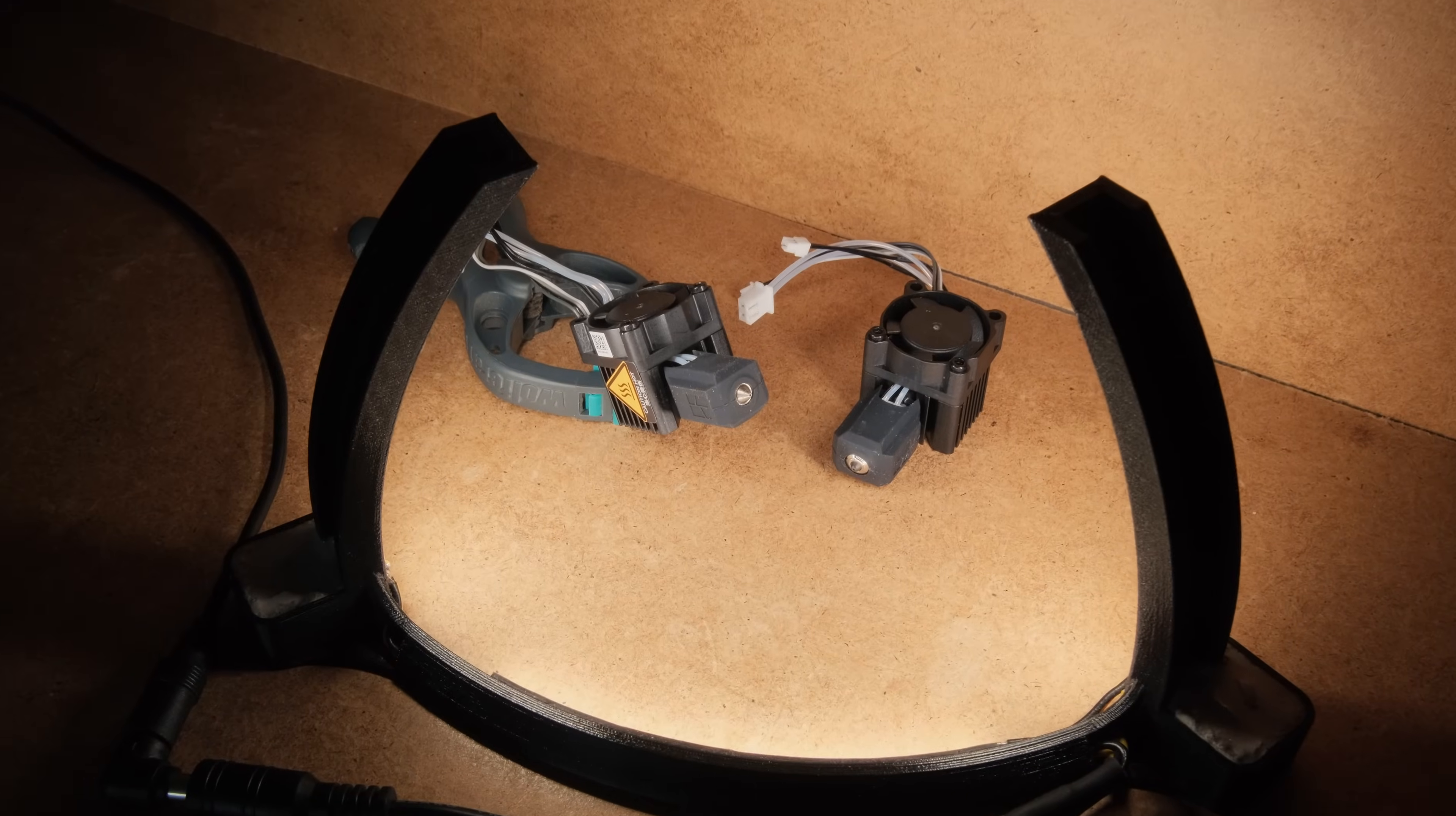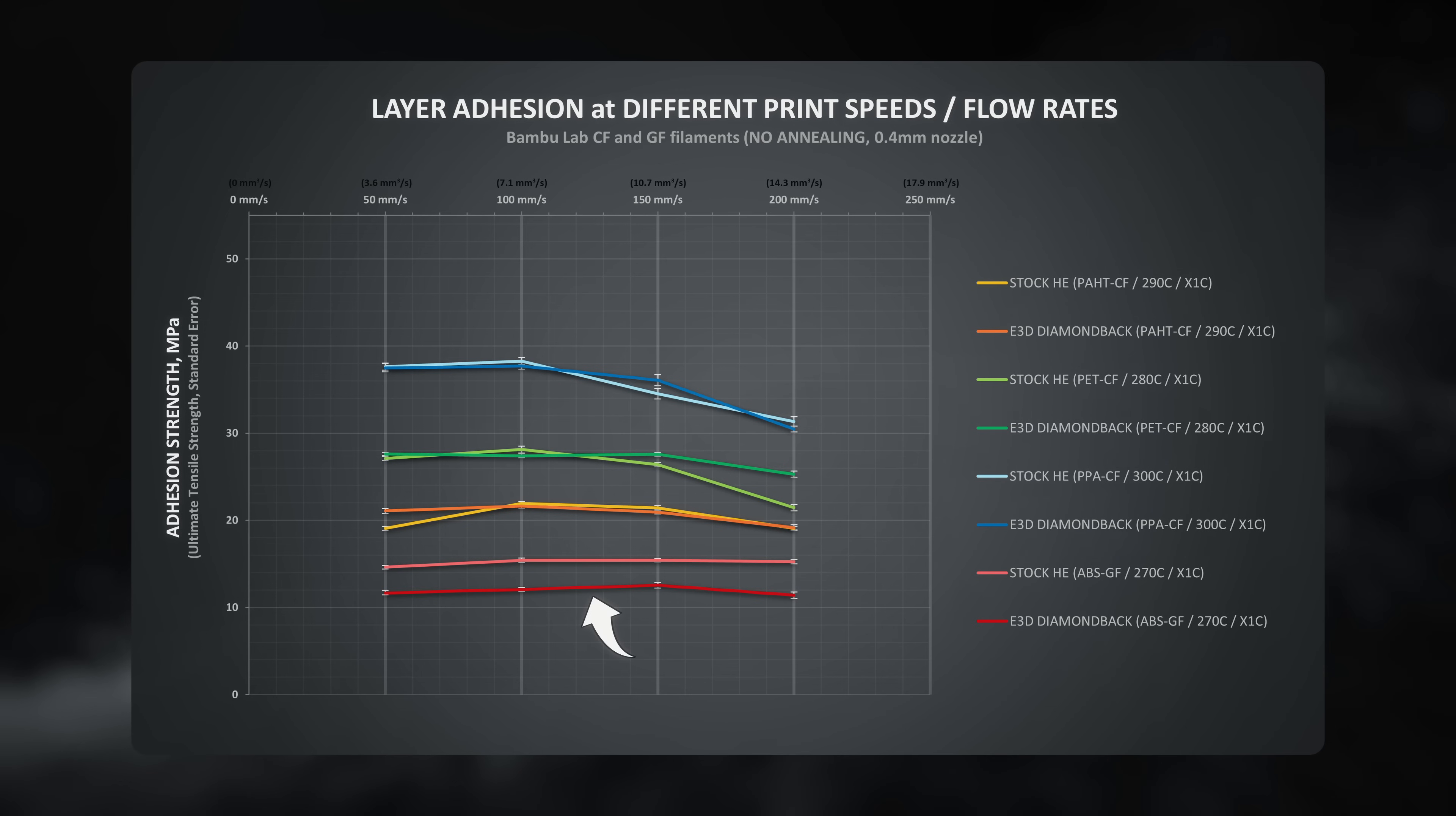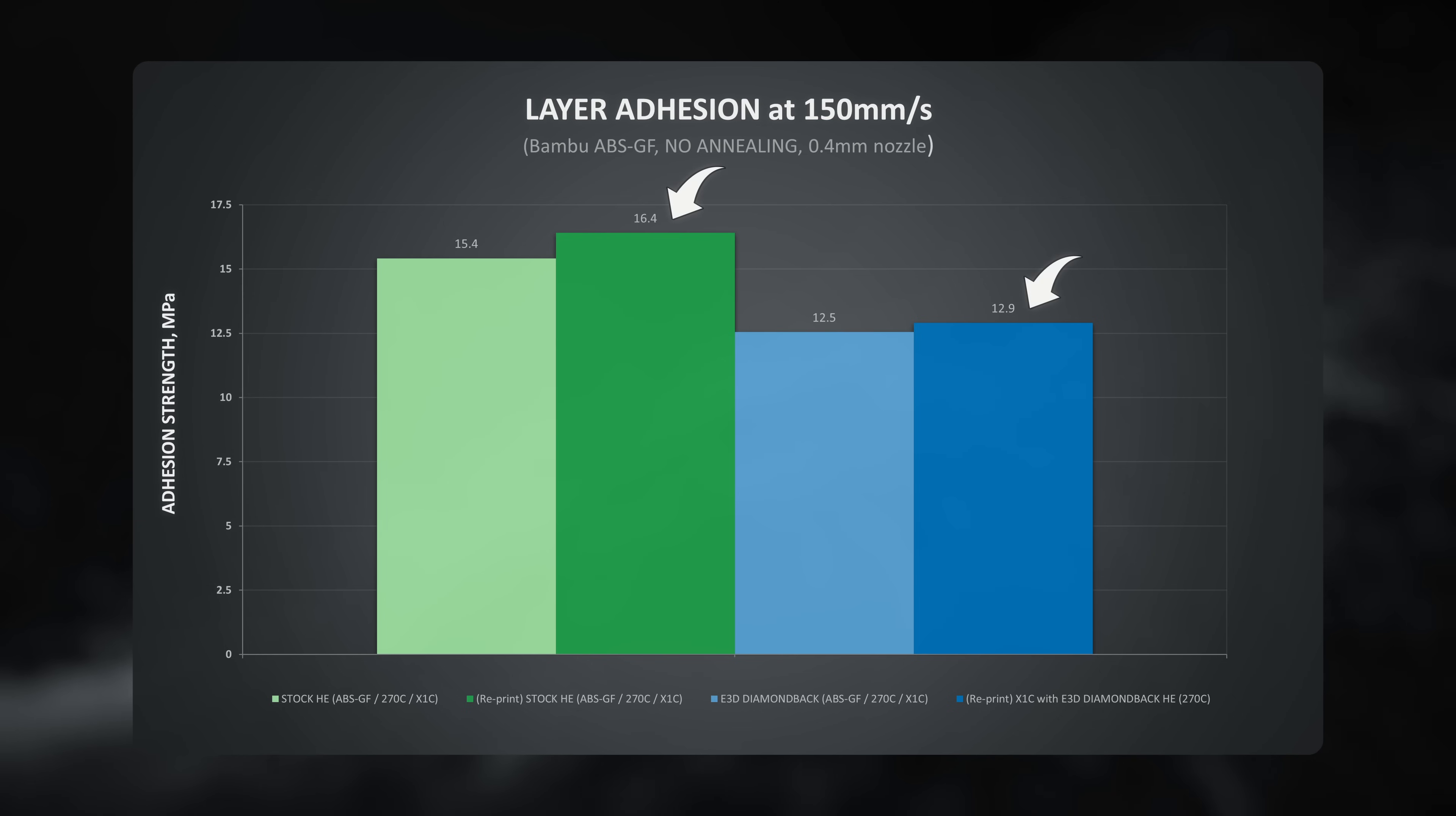However, the adhesion results with the Diamondback hotend somehow were worse by around 20%, which at first made no sense whatsoever. When writing this script, I retested the hotends at 150mm per second printing speeds and still got identical results.